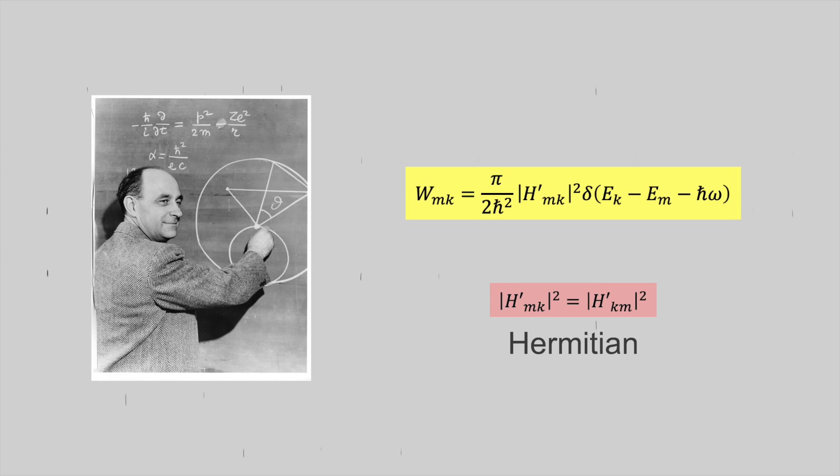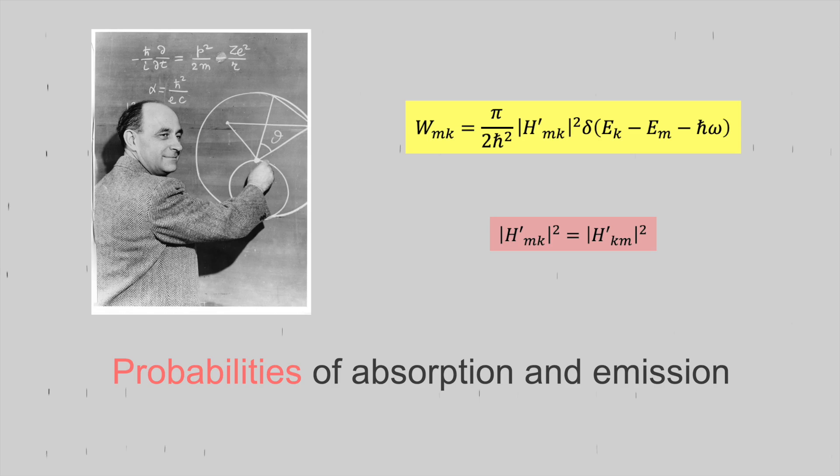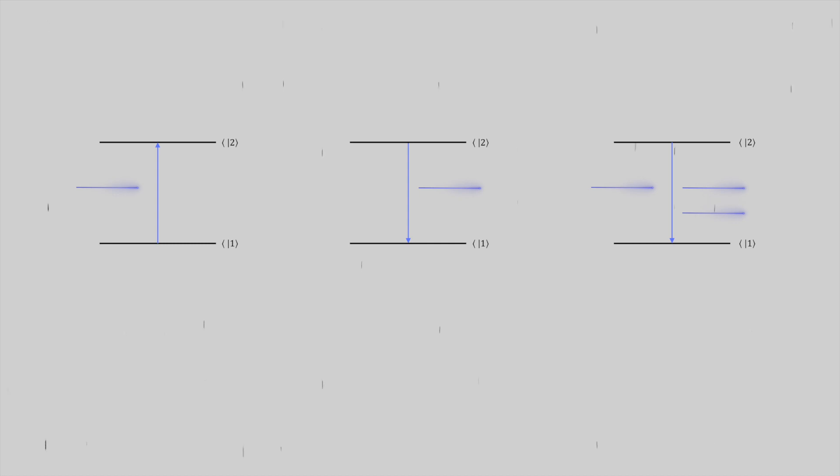This has very big implications. This means that the probabilities of absorption and stimulated emission are actually the same. So if we know the probabilities for both these processes are identical, how can we achieve this amplification, right?